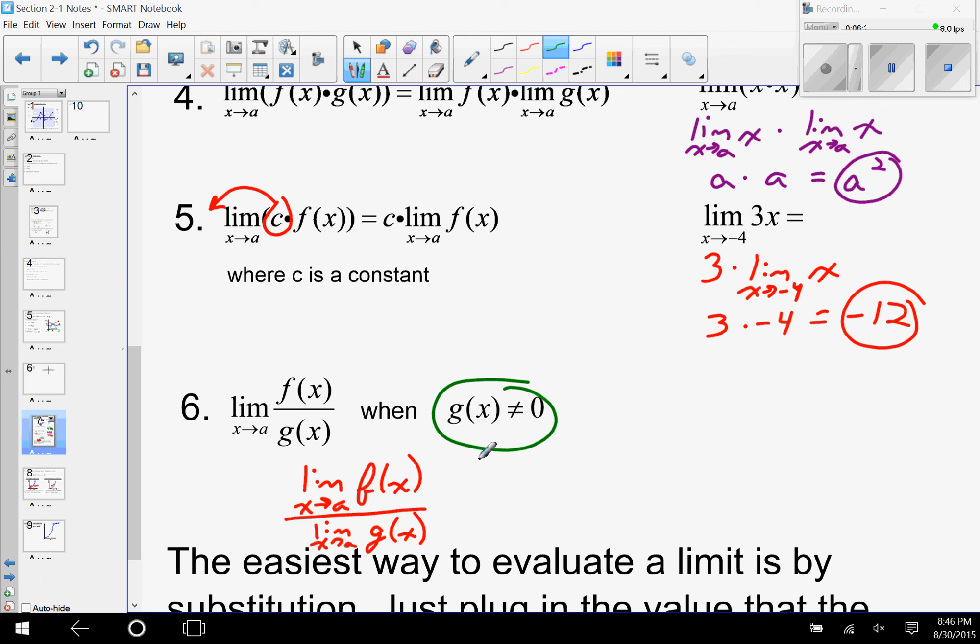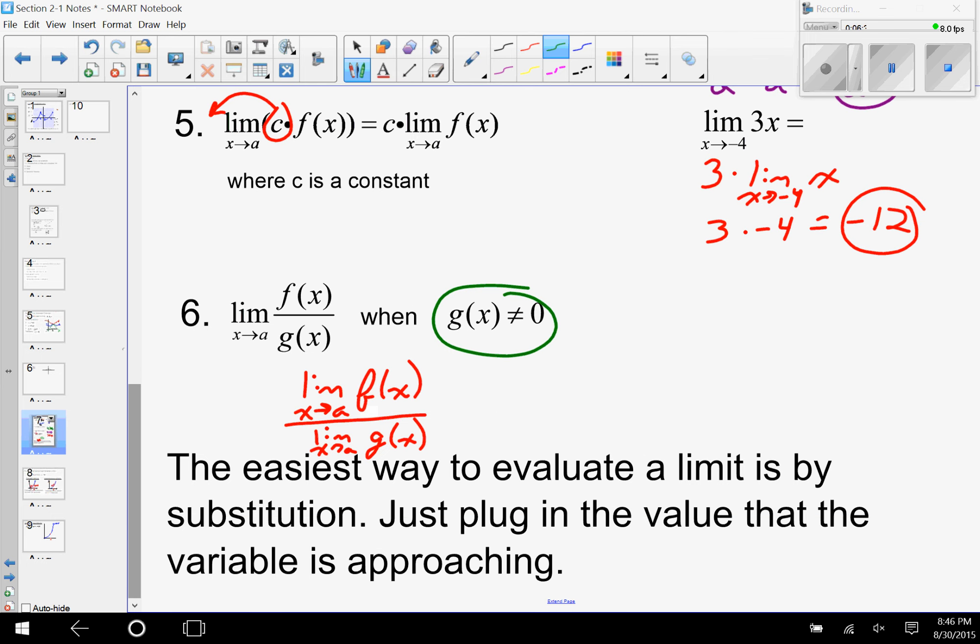Because remember, we know x never reaches a, we approach it. Now, if we're far away from a it's okay, but close to a we have to make sure that the bottom, our denominator, is never zero, because that's just not possible. So these properties, most of them get used without thinking—this is just reinforcing.